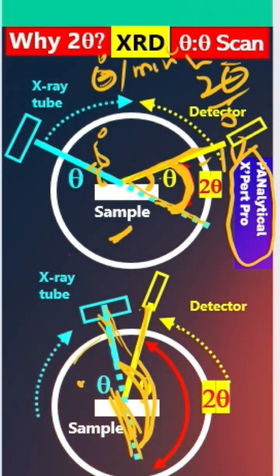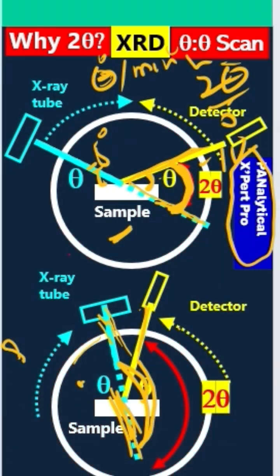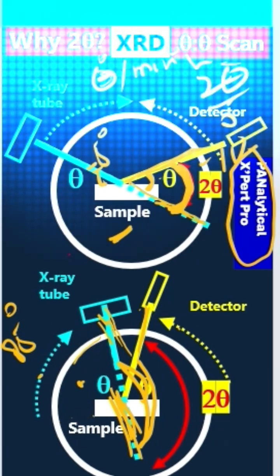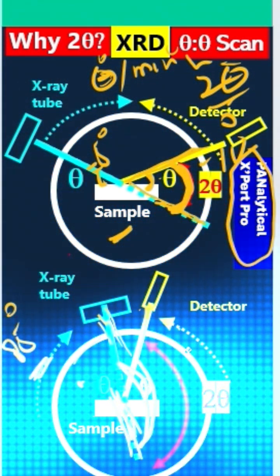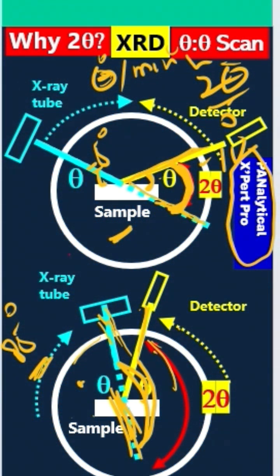So if the scan goes from 5 degrees to almost 90 degrees, that is 85 degrees total range in the two-theta scan.